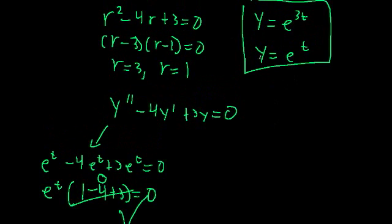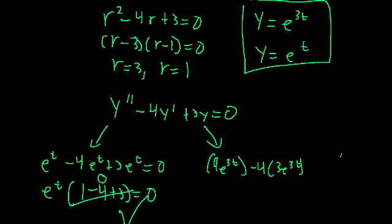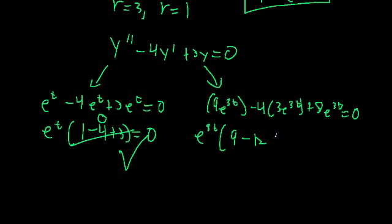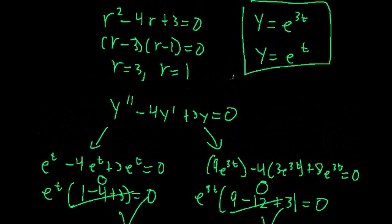Likewise, for y equals e to the 3t: the first derivative is 3e to the 3t and the second derivative is 9e to the 3t. Plugging in gives 9e to the 3t minus 4 times 3e to the 3t plus 3e to the 3t equals 0. Factoring out e to the 3t gives 9 minus 12 plus 3 equals 0, which is true. So this second solution also satisfies the differential equation.